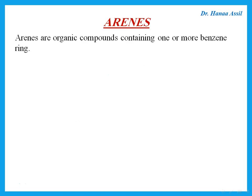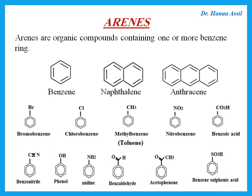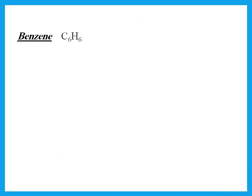What are arenes? Arenes are organic compounds containing one or more benzene rings. They are derivatives of benzene. They can have more than one ring or they can have one ring with substituents on them — bromobenzene, chlorobenzene, methylbenzene, and so on. These are all arenes, and we're going to talk about the chemistry of these compounds.